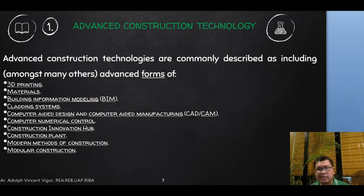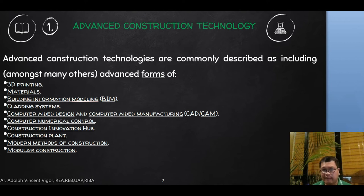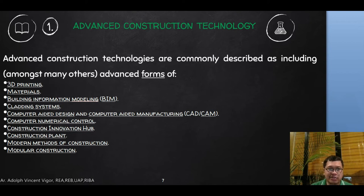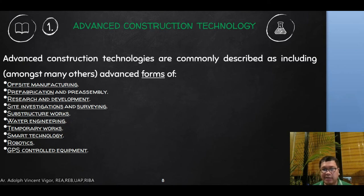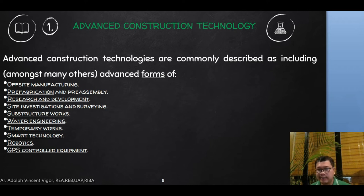Advanced construction technologies are commonly described as including, among many others: advanced forms of 3D printing, materials, Building Information Modeling (BIM), cladding systems, computer-aided design and computer-aided manufacturing (CAD/CAM), computer numerical control (CNC), construction innovation hubs, modern methods of construction (MMC), modular construction, off-site manufacturing, pre-fabrication and pre-assembly, research and development, site investigations and surveying, substructure works, water engineering, temporary works, smart technology, robotics, and GPS-controlled equipment.